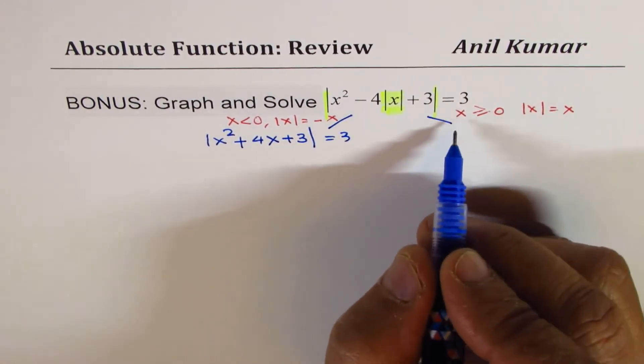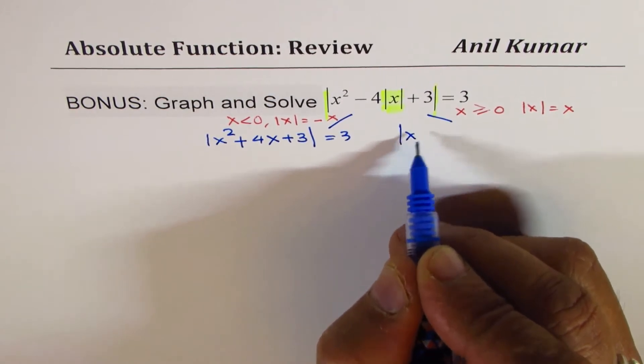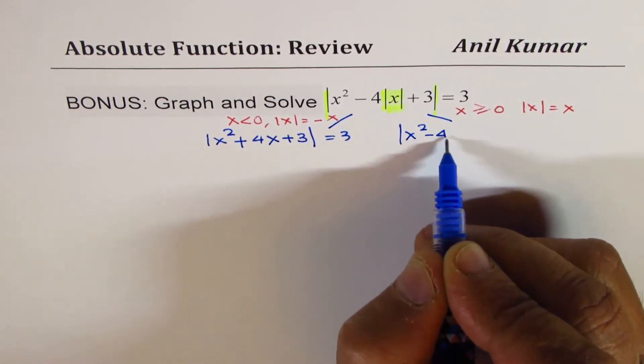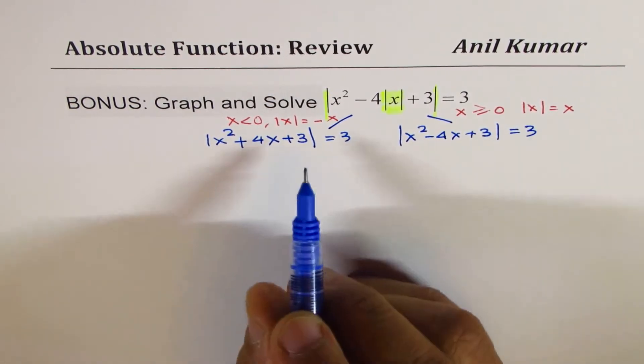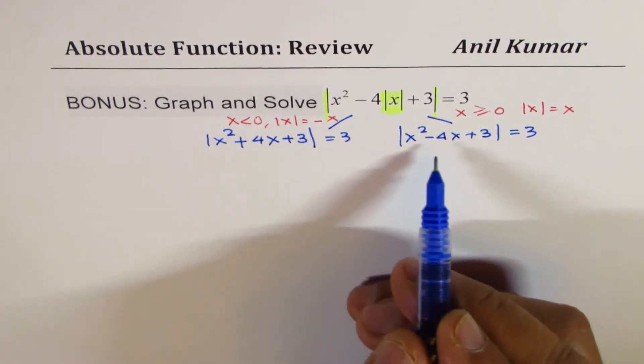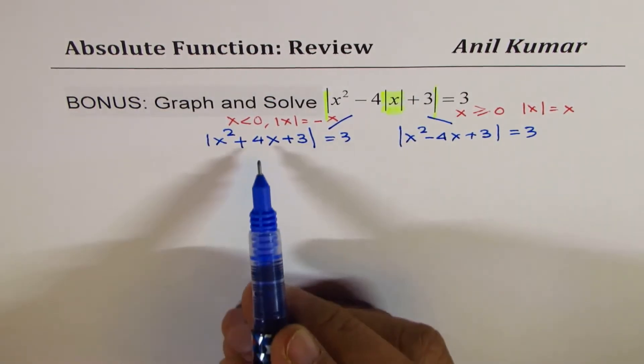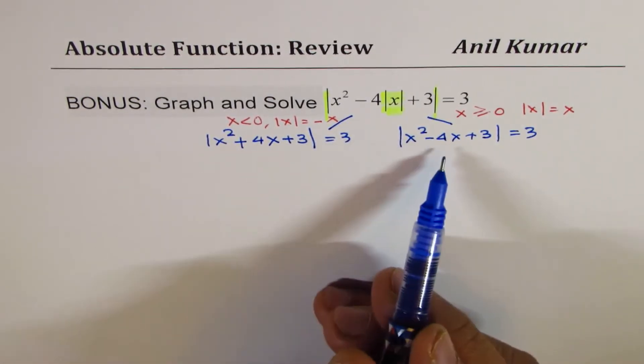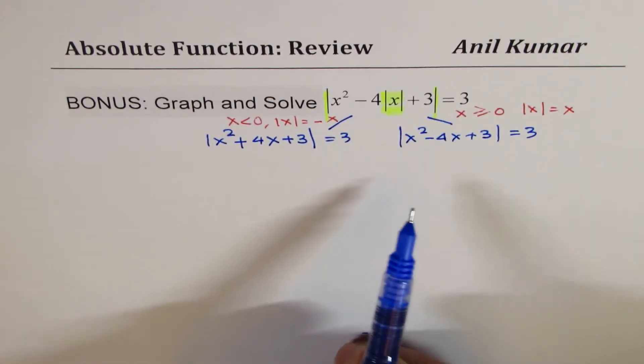So that becomes one equation. If x is greater than or equal to 0, I could rewrite this as absolute value of x squared minus 4x plus 3 equals to 3. And now we can solve these two equations. They are also quadratic, may cause a lot of difficulty. And that actually may yield four different conditions. So you're looking for a massive solution here.